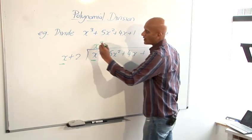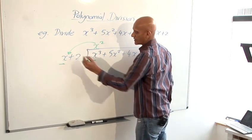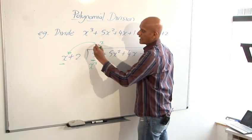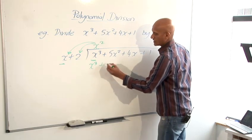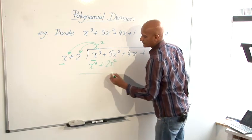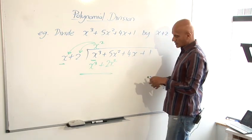And the next thing I do is I multiply that. So I do x squared times x, which is x cubed. And I do x squared times 2, which is 2x squared. And then once I've done that,